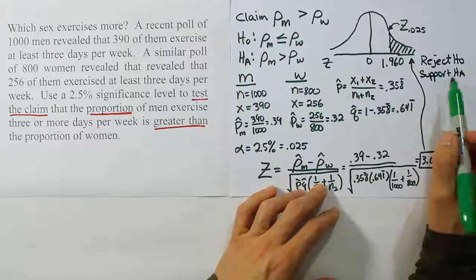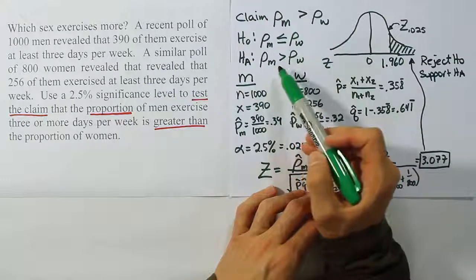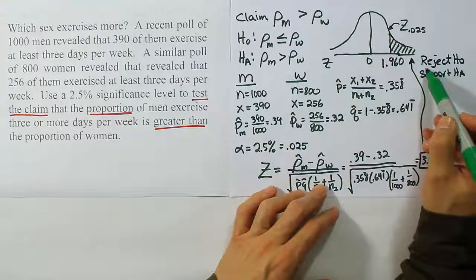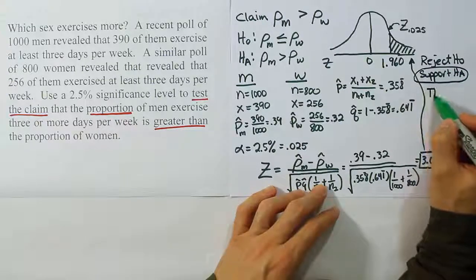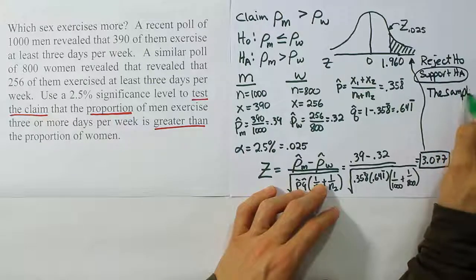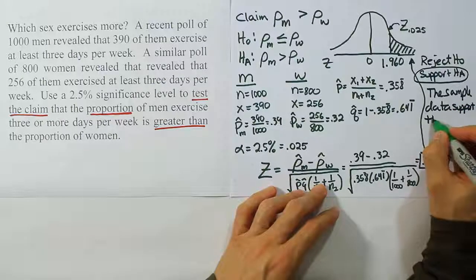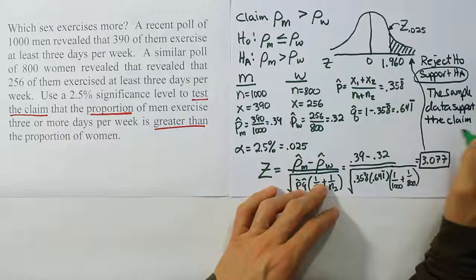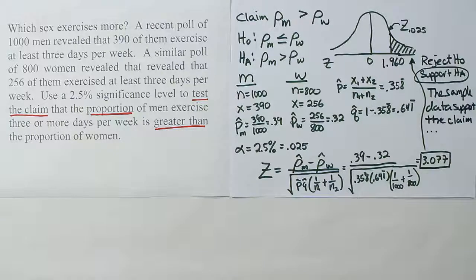Looking back, our claim was the same as HA, so we use the phrasing: the sample data support the claim. The claim, of course, is that the proportion of men who exercise at least three days a week is indeed greater than the proportion of women who exercise at least three days a week.